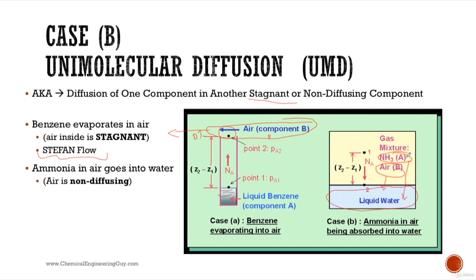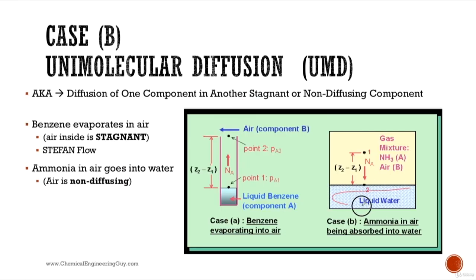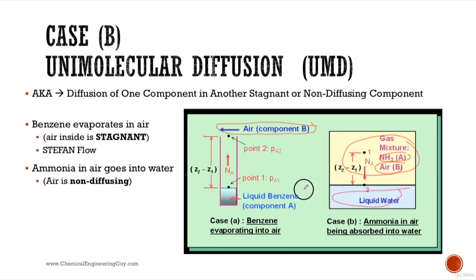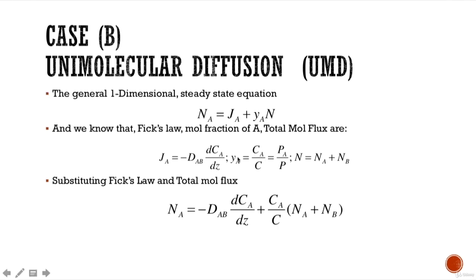As you can see, there are two phases: the liquid phase and the gas phase, in which we have one species A diffusing and the other one, B, which is non-diffusing. In this case, air is the non-diffusing species B and A is the diffusing species.